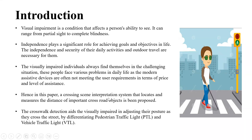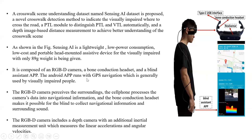Hence, this paper proposes a crossing scene interpretation system that measures the distance of important crossroad objects. A crosswalk detection system aids the visually impaired in adjusting their posture as they cross the street by differentiating PTL and VTL — that is, pedestrian traffic light and vehicle traffic light. A crosswalk scene understanding system uses a dataset named the Sensing AI dataset, proposing a novel crosswalk detection method to indicate where to cross the road, a PTL module to distinguish PTL and VTL automatically, and a depth image-based distance measurement.